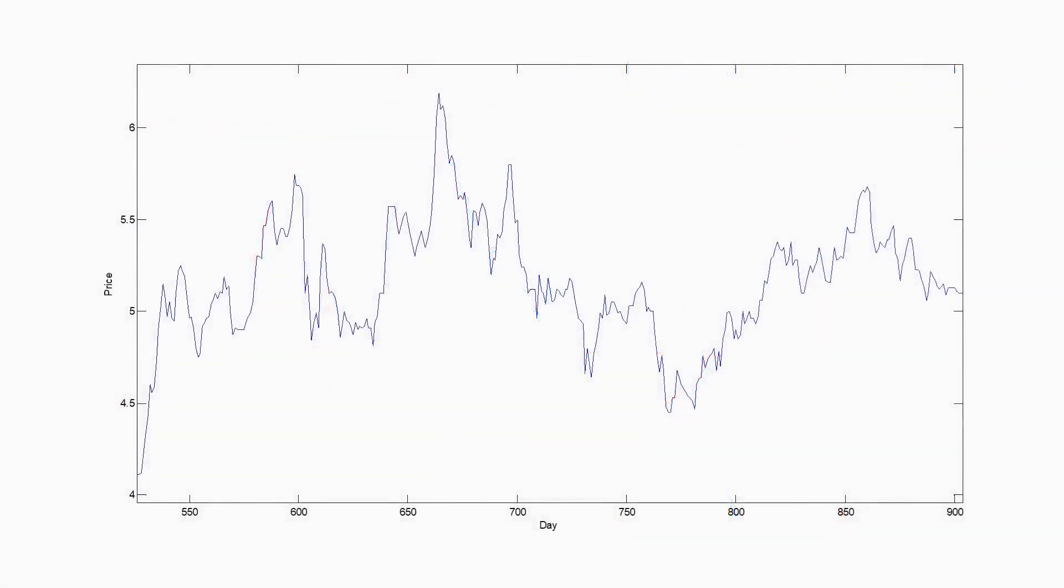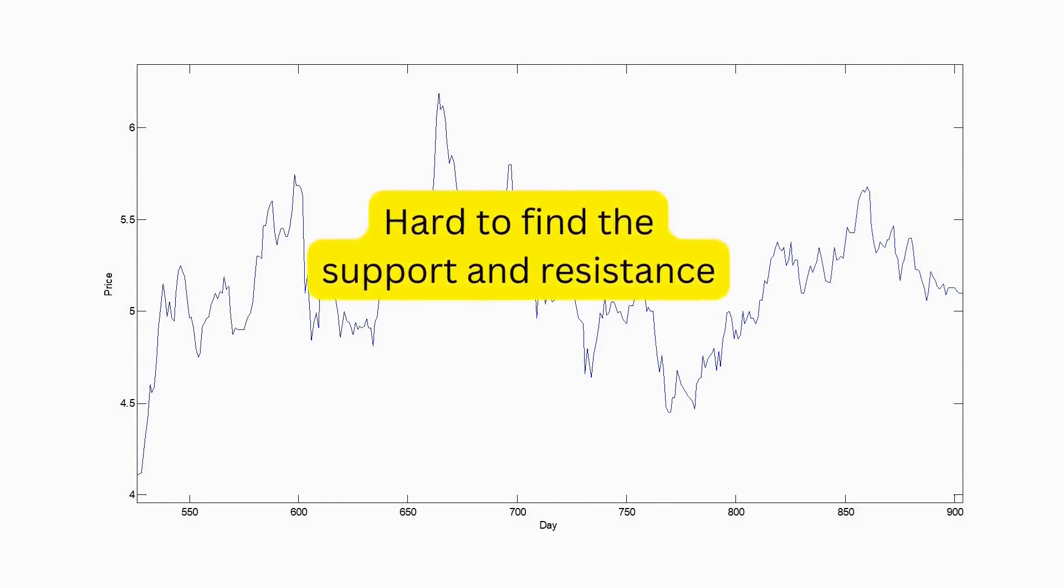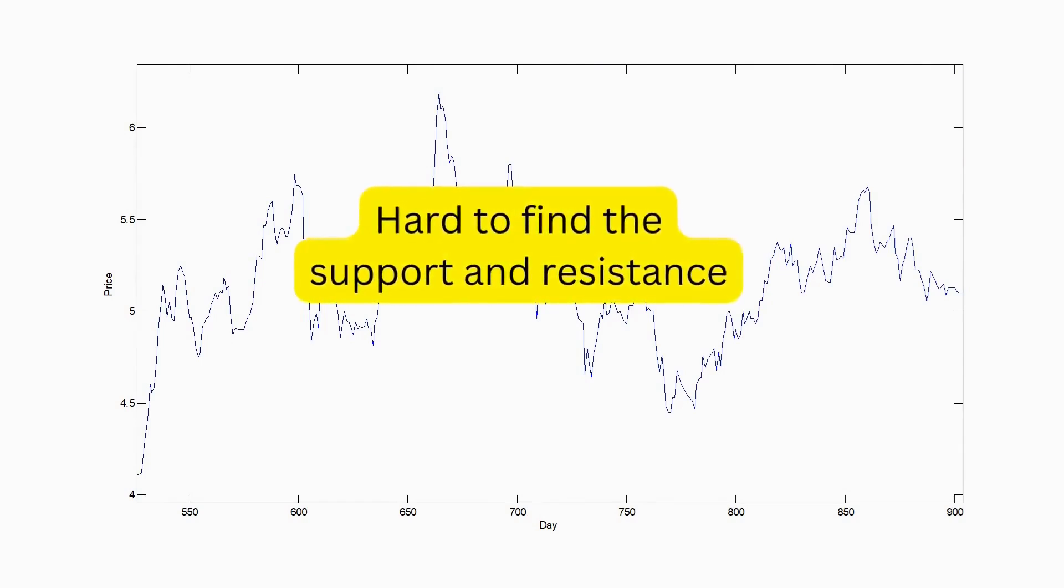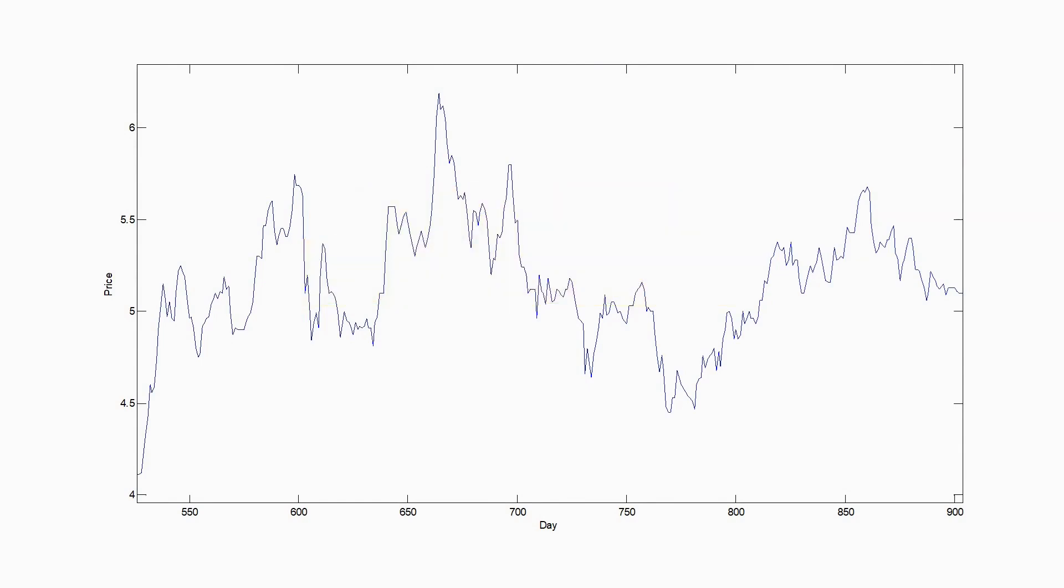I think the basic problem when you don't use long enough time scales is that you will be constantly having to reset your support and resistance lines because the market at that scale is more driven by fluctuations and can be moving very quickly in one direction or another. So it's meaningless to try to draw such lines due to the rapidly changing nature of the market.